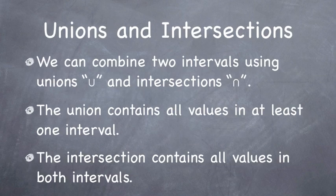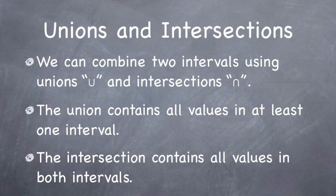We can take two intervals and combine them. The two most common ways are through unions and intersections. If we take the union of two intervals, we take all values that are in at least one of those intervals. There are some unions that cannot be simplified. The intersection of two intervals is the collection of all values that are in both intervals. Unlike the union, we can always reduce an intersection.